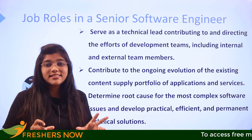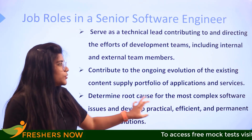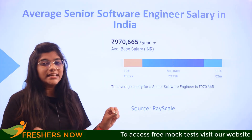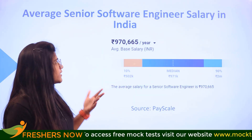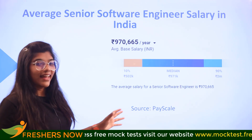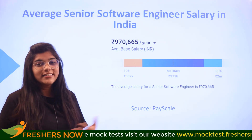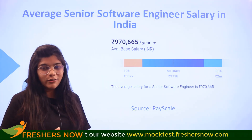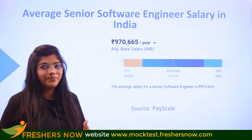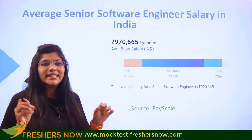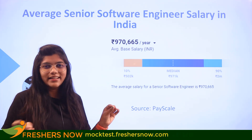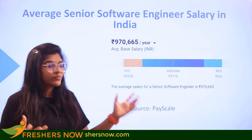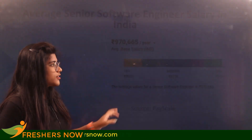Now you should understand how these people are paid. On average, a senior software engineer earns approximately 9 lakhs 70,000 per annum.